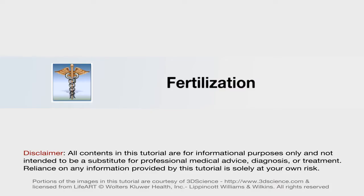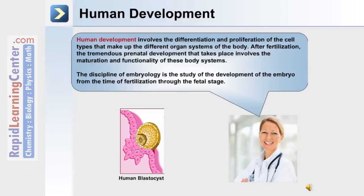Let's begin by discussing what takes place at fertilization. Human development involves the differentiation and proliferation of the cell types that make up the different organ systems of the body. After fertilization, the tremendous prenatal development that takes place involves the maturation and functionality of these body systems. The discipline of embryology is the study of the development of the embryo from the time of fertilization through the fetal stage.